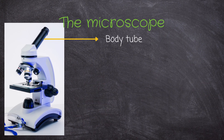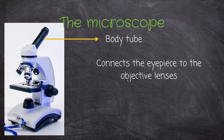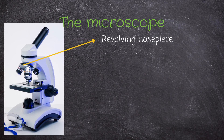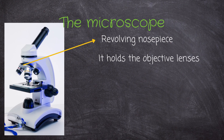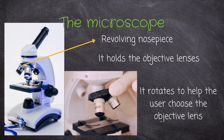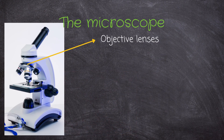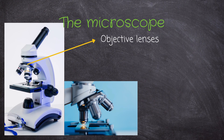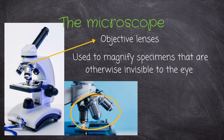The eyepiece is attached to the body tube, and the function of the body tube is to connect the eyepiece to the objective lenses. Moving on to the revolving nosepiece, which holds the objective lenses and rotates to help the user choose the correct objective lens.